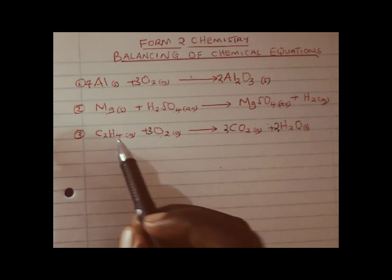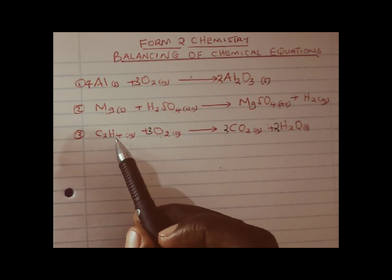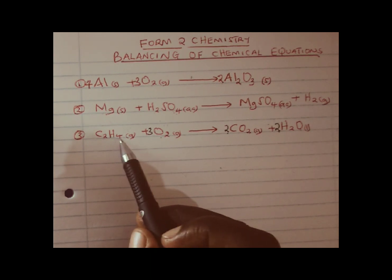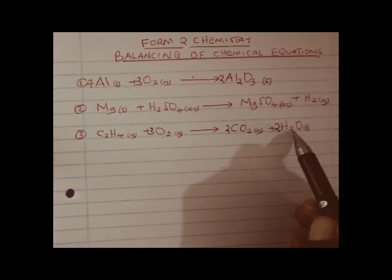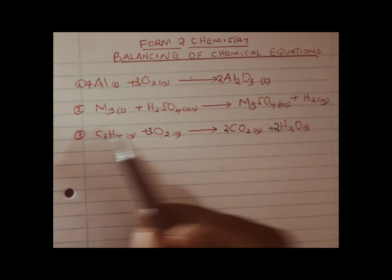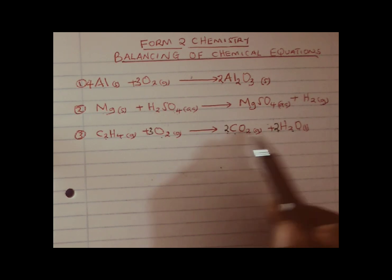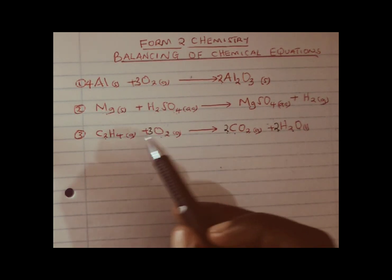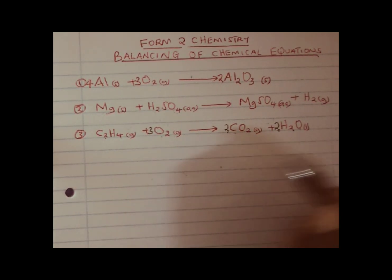Let us look at the number of hydrogens. We have 4 hydrogens on the reactant side and also 4 on the product side. Carbons are 2 and carbons are 2. Oxygens: 3 times 2 equals 6, and on the product side 6 as well. Therefore, that equation is now balanced.